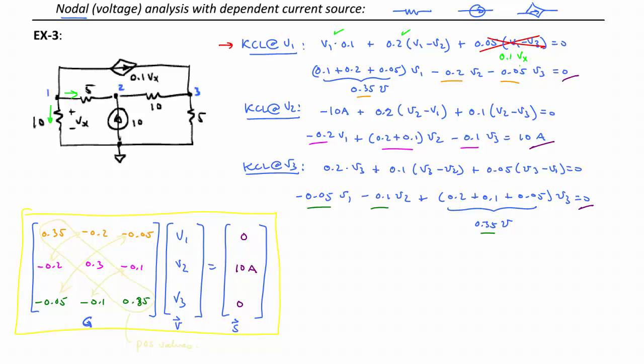Okay, we know that it's a current source, that the current is leaving from node 1, so it's in the right direction, we don't have to put a minus sign in front of it. And that current has a value 0.1 Vx. We need to substitute something in for Vx, but we'll do that in a moment.